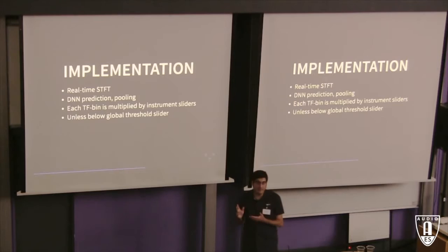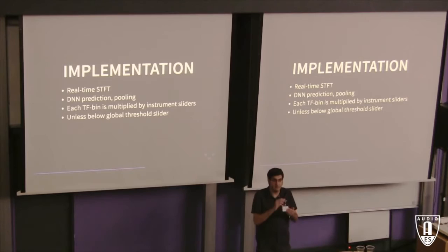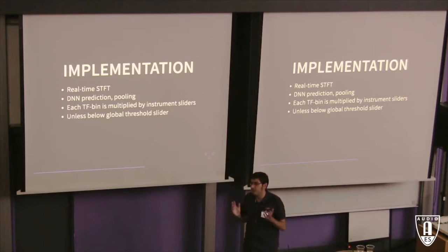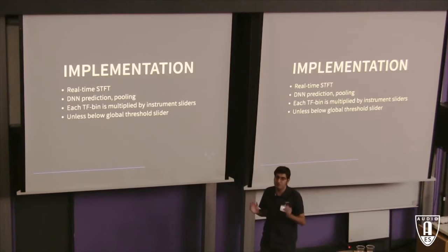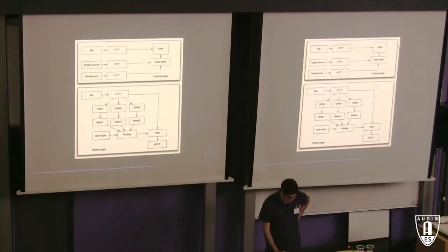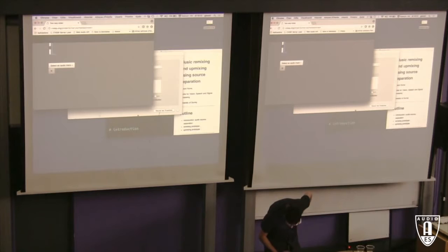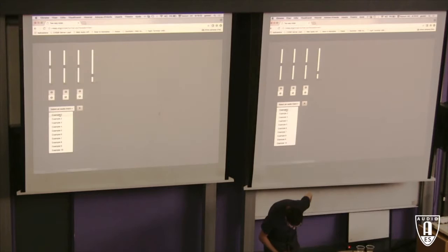The user can modify the volume of each instrument, scaling the time-frequency bins classified to it. There's also a general threshold slider: if the output probability — really the sigmoid output — is below a certain threshold, we ignore that time-frequency bin entirely. Let's see if I can get the demo to work — there's a bit of a resolution problem, but here's the web demo.